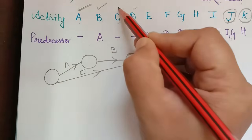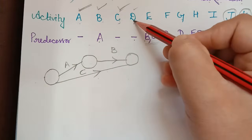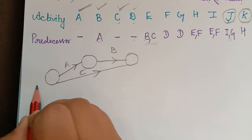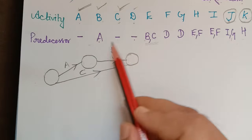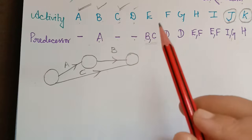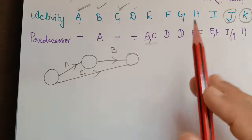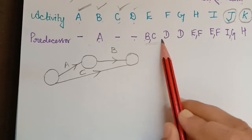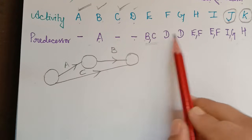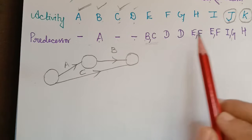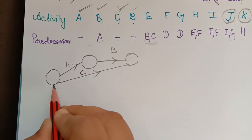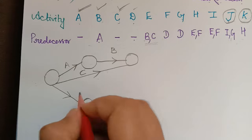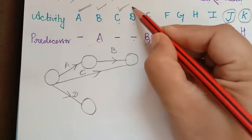Activities A, B, and C are done. Next is activity D, which has no predecessor, so it starts from a new initial node. We check the predecessor list — D has appeared twice but never alongside any already-completed activity, so we draw D as a new activity with its own starting node.